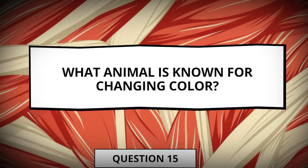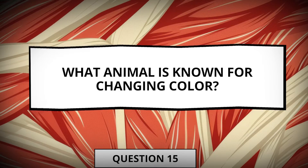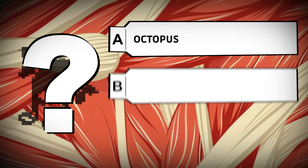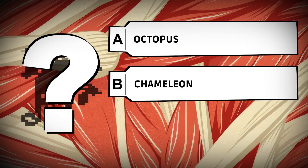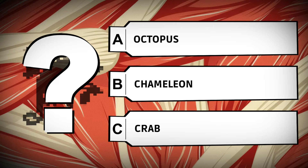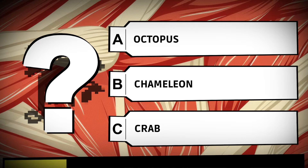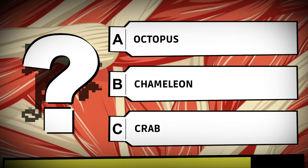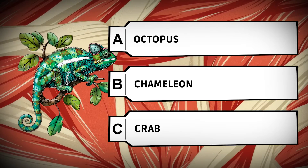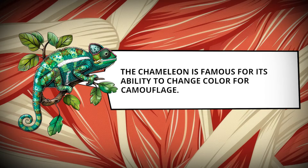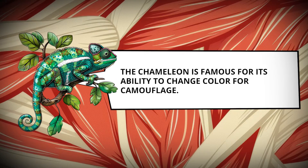What animal is known for changing color? Octopus. Chameleon. Crab. The chameleon is famous for its ability to change color for camouflage.